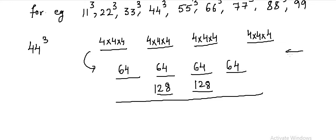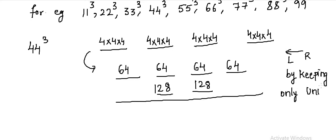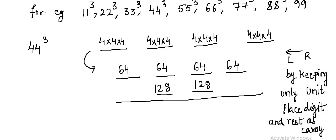Now just add from right to left by keeping only the unit place digit as the answer and the rest as carry. So what we have is 64 here — we will keep 4 and treat this 6 as carry. Now we add: 8 plus 4 is 12, and 12 plus 6 is 18.